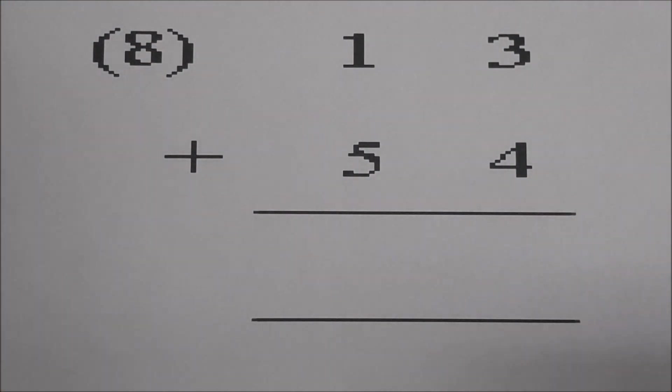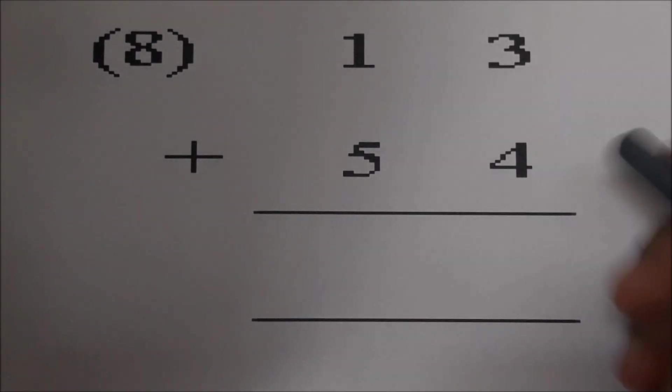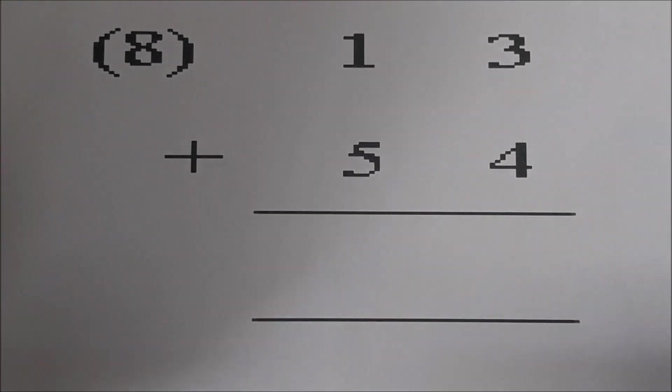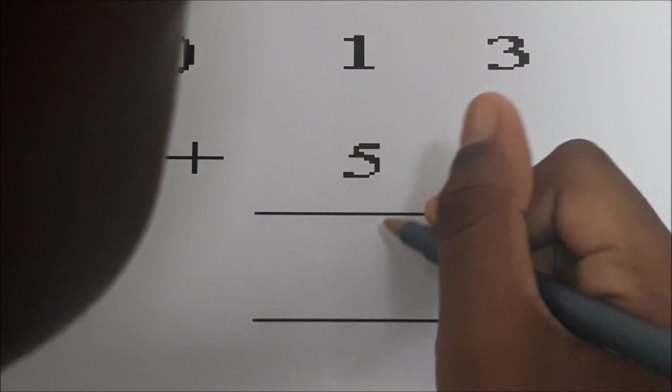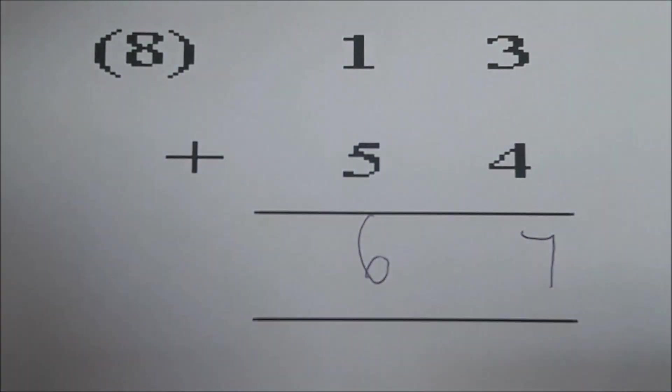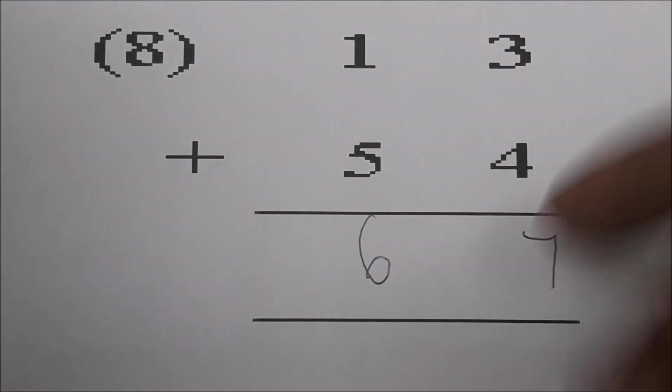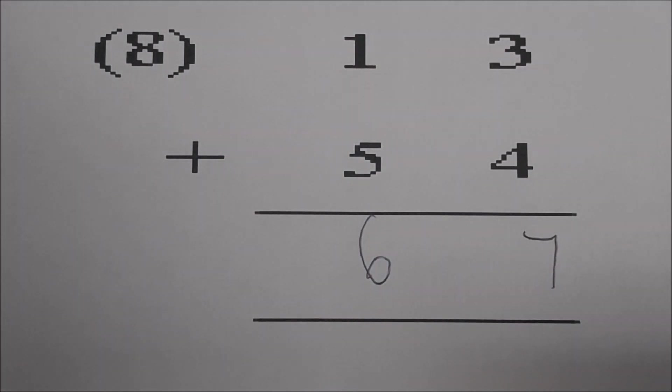Number eight Sky. What are you adding? Thirteen plus fifty four. Go ahead and work it for us. Say what you're doing. Three plus four is seven. And one plus five is six. Very good. Three plus four is seven. Five and one is six. So your answer is what? Sixty-seven. Excellent job.